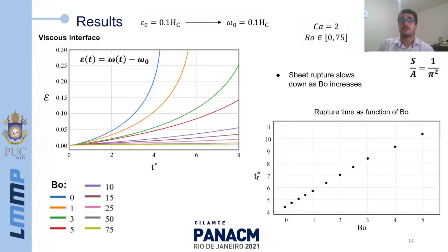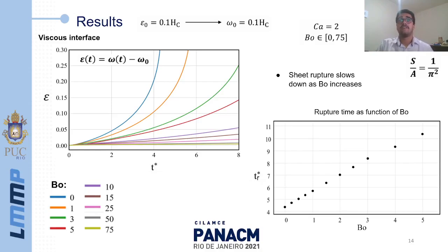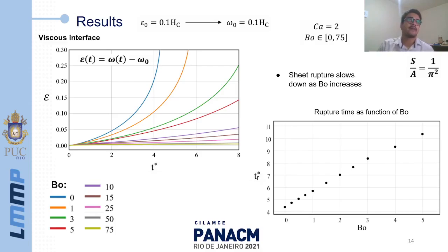Now we move to the results for the viscous interface case. We keep S over A fixed at 1 over pi squared, the capillary number fixed at 2, and vary the Boussinesq number between 0 and 75. The inviscid interface corresponds to the Boussinesq number equal to 0. The left chart shows the evolution of perturbation epsilon in time: as the Boussinesq number increases, the perturbation evolution becomes slower. The right chart presents the rupture time as a function of the Boussinesq number, showing that interface viscosity slows down the rupture process.